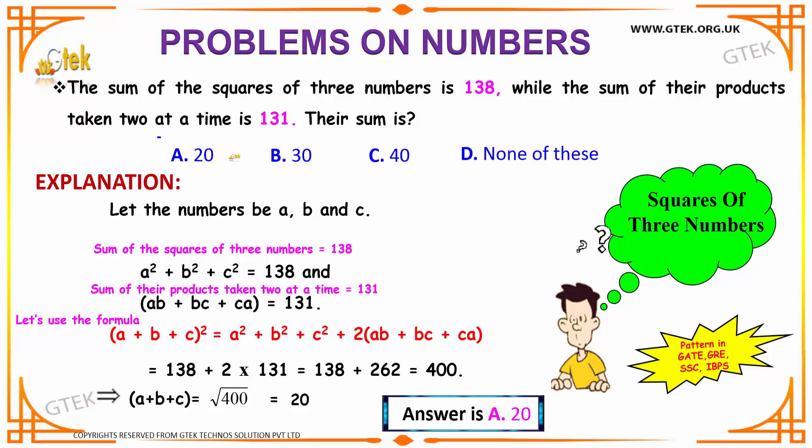Let us see the options. Option A, 20, B, 30, C, 40, and D as none of these.